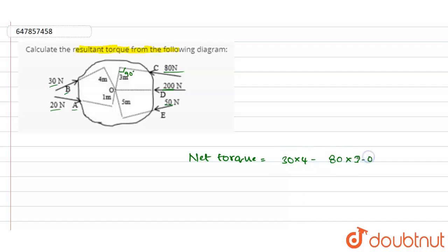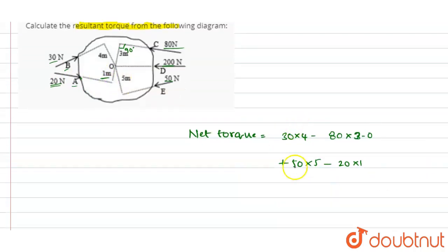Okay, so plus 50 into 5 minus 20 into 1. So all these are the distances to the origin from the outer part. That means, if you consider for A, the force value is 20 multiplied with 1 meter, the distance. So I have written the equation like that.